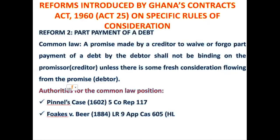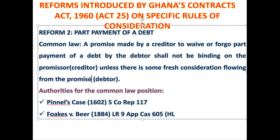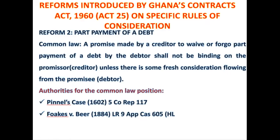This is the common law rule on part payment of a debt: when a promise is made by a person to waive or forgo the part payment of a debt, under the common law that promise shall not be binding against the promisor unless there is some consideration flowing from the promisee. This is supported by the cases of Pinnel's Case as well as Foakes v Beer. Now this rule has been modified by Ghana's Contracts Act of 1960 Act 25.